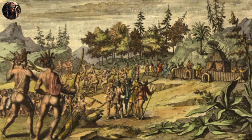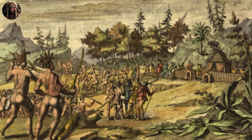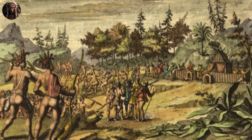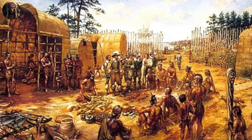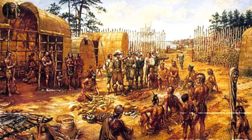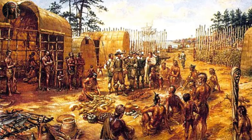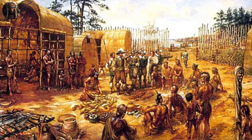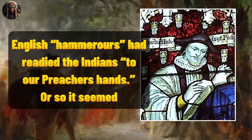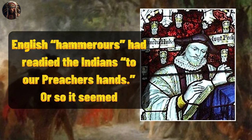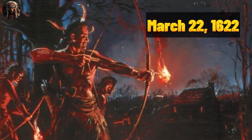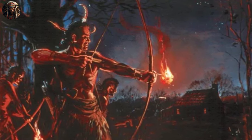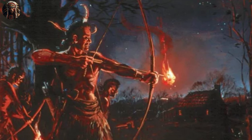The title of Mamanatowick did not immediately transfer to Opechancanough, but as the Weroance of the Pamunkey, he controlled the last great stronghold in Tsenacomoco. The English, meanwhile, took Pocahontas' conversion as a sign that all of the Powhatans were prepared to abandon their traditions. Even Opechancanough seemed to flirt with conversion. As Hakluyt had predicted, English hammer-oars had readied the Indians for their preacher's hands — or so it seemed. On March 22, 1622, Opechancanough's warriors struck the colony suddenly and without the usual restraint, launching the Second Anglo-Powhatan War.